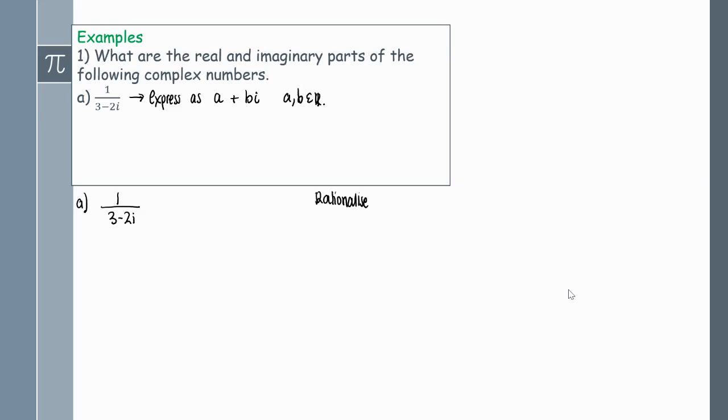We're going to rationalize by multiplying by the conjugate. The conjugate means we flip the middle sign of our complex number. So instead of 3 minus 2i, I'm going to multiply everything by 3 plus 2i. On the numerator I'm just going to be left with 3 plus 2i. On the bottom, remember you can use your FOIL method and the middle term should cancel out.